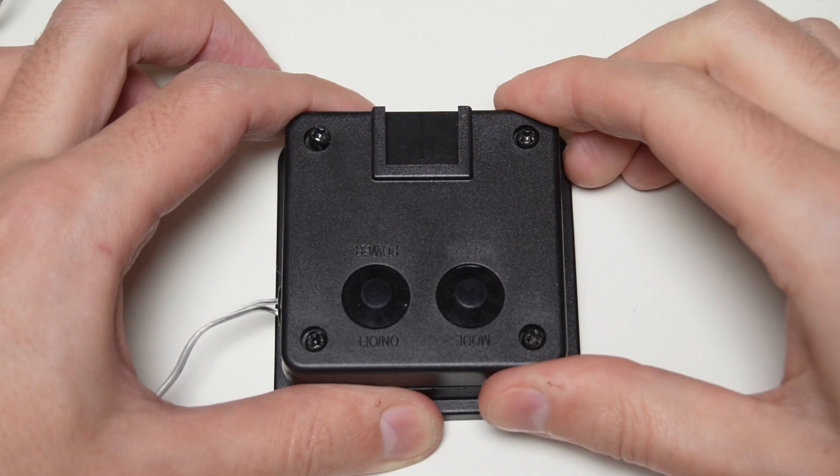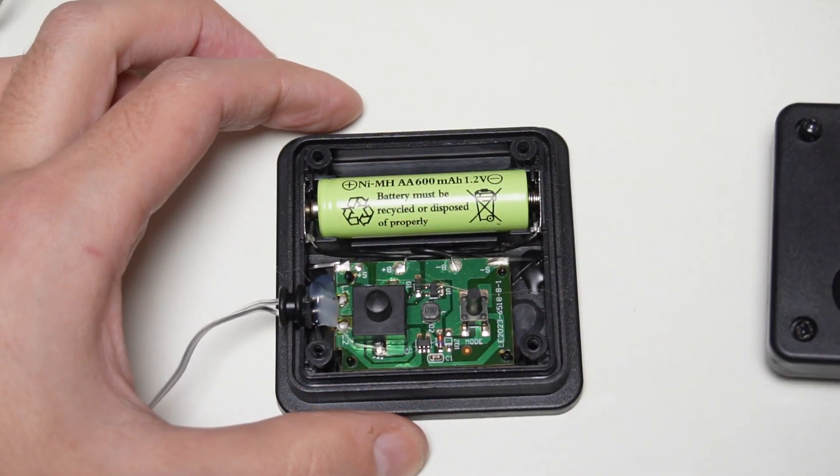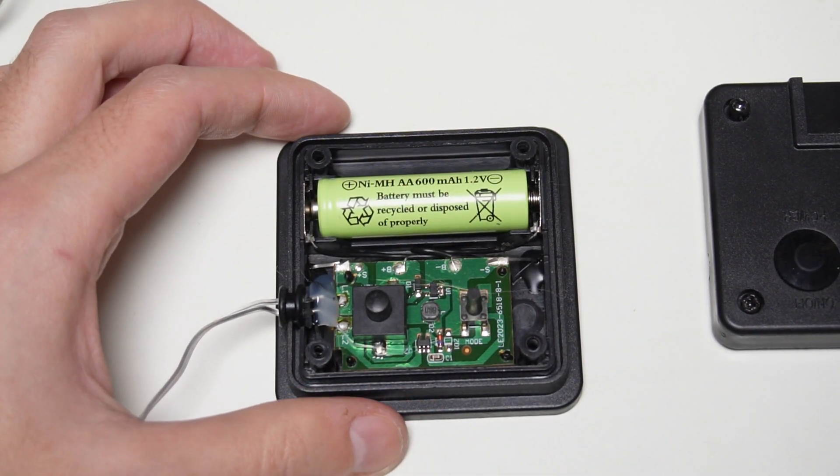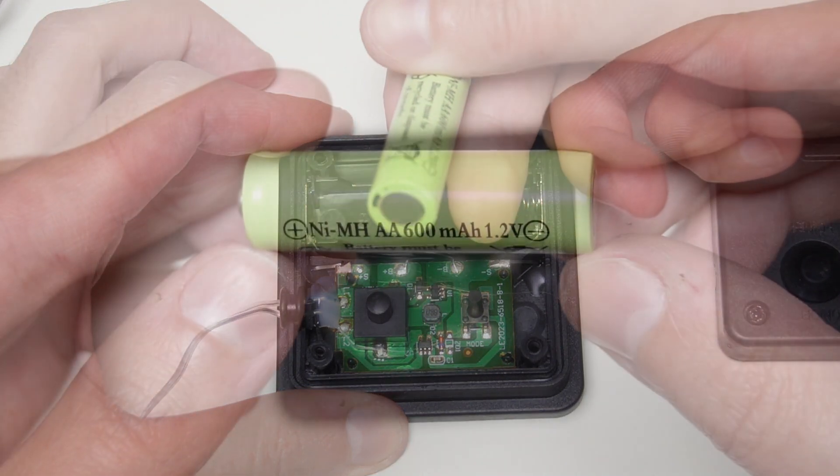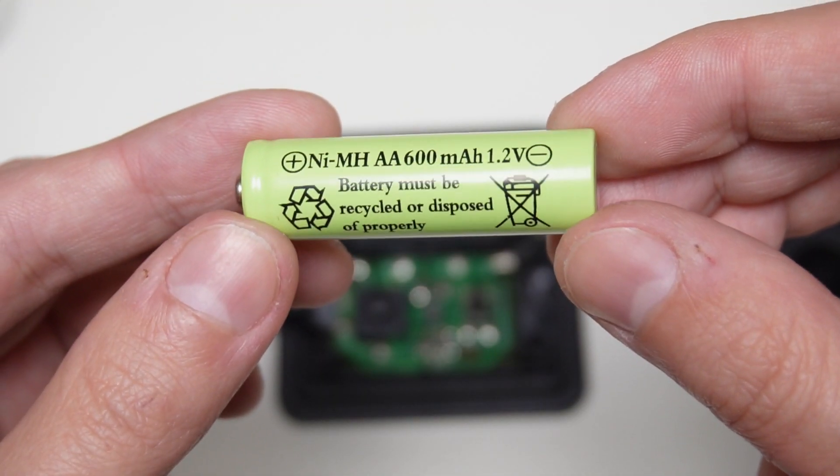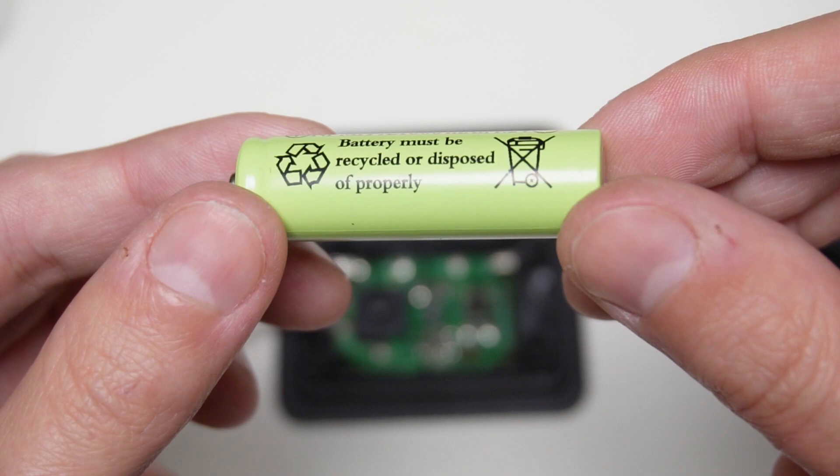After the cover is removed you can see the battery that needs to be changed. It's a AA rechargeable battery. I love the fact that it's not soldered because I still don't know how to use a soldering iron.